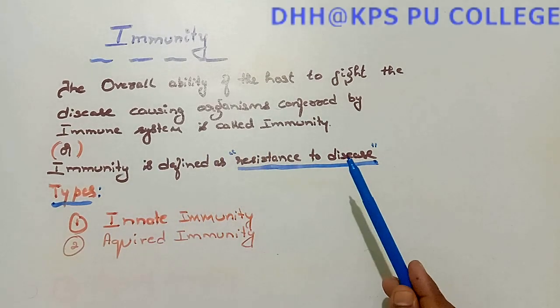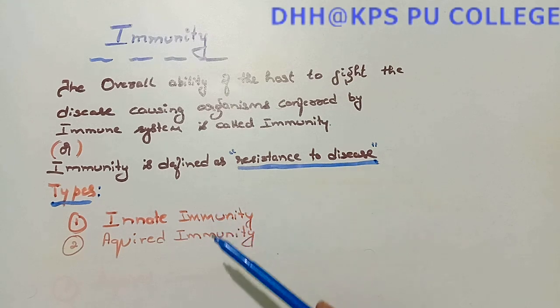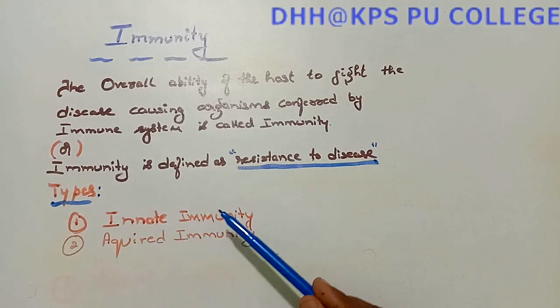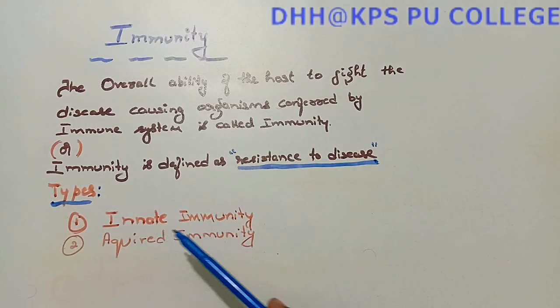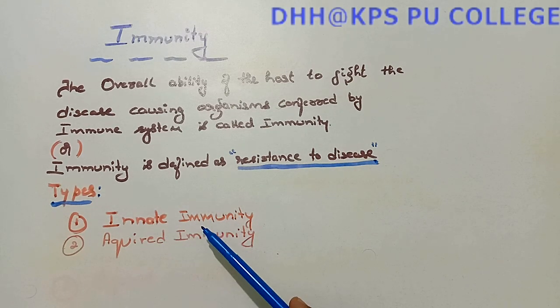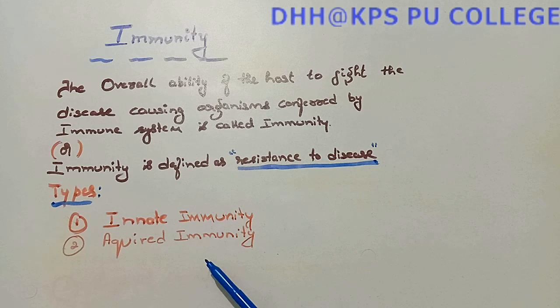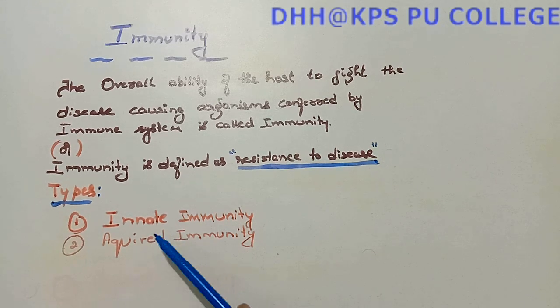Let us see the types of immunity. It is of two types: the first one is innate immunity and the second one is acquired immunity.